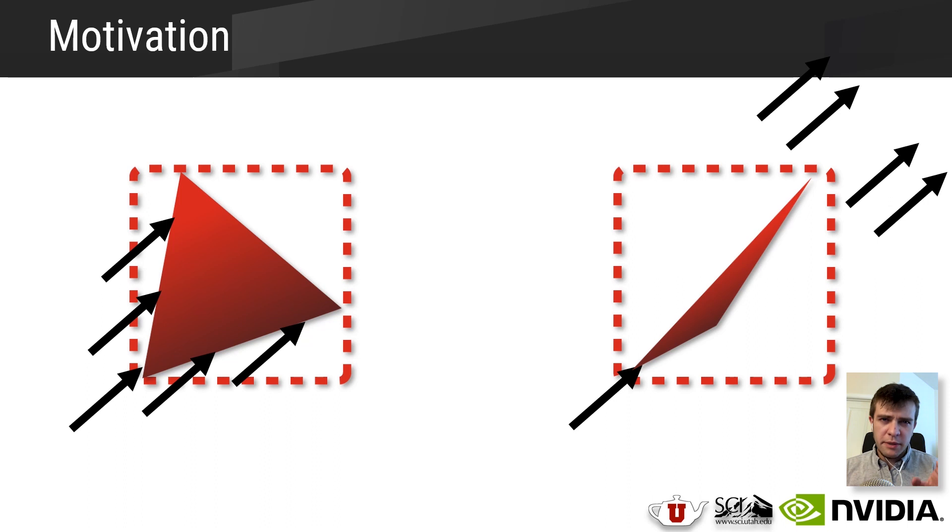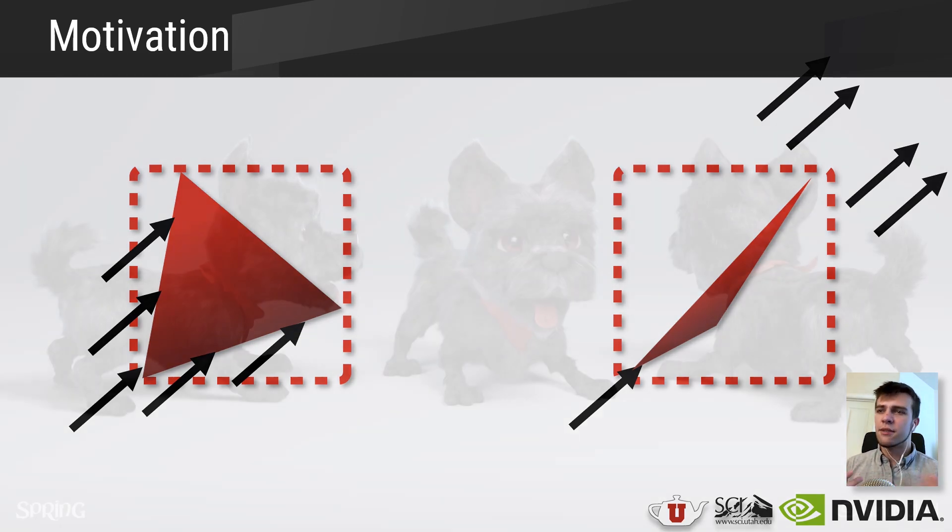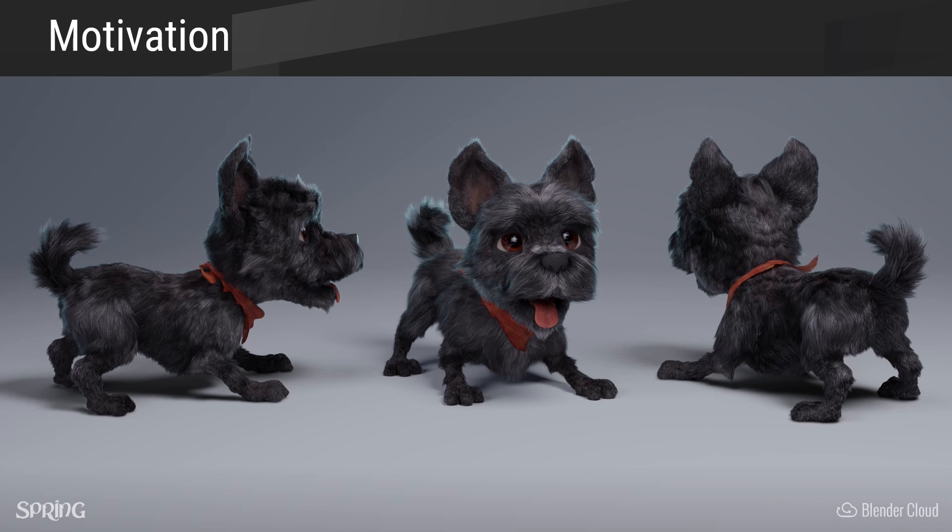Ultimately, we need to find a solution to this problem, since these long diagonal primitive types are actually really common. We see them all the time in the form of cylinders, curves, and ribbons. In production rendering, these primitives are commonly used to render hair and fur. For example, this character Autumn is from the Blender movie Spring, and uses about 3.4 million curve segments. Many of these curve segments are highly diagonal and lay really close to each other.